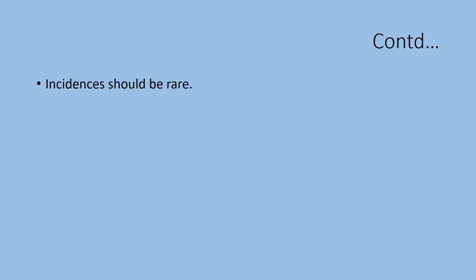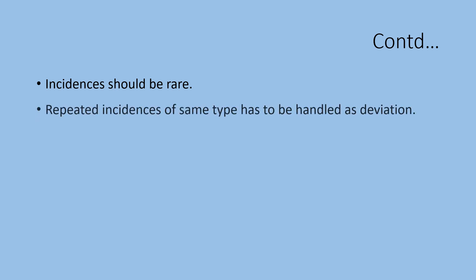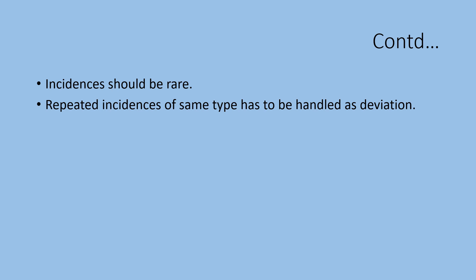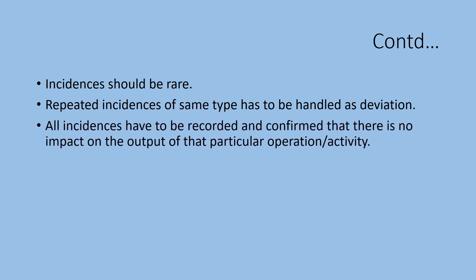By now, you understand the difference between incidents and deviations. Accidents are rare, so incidents also should be rare. If repeated incidents of the same type occur, then they have to be handled as deviations. All accidents have to be recorded as incidents and confirmed that there is no impact on the output of the particular operation or activity. Never take the path of recording something as an incident just to make it look simple and avoid a detailed investigation — this attitude is not good. Try to record deviations and incidences as described in this video in detail. Thank you.